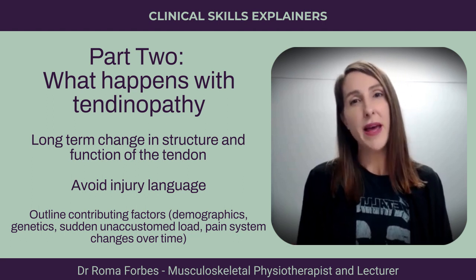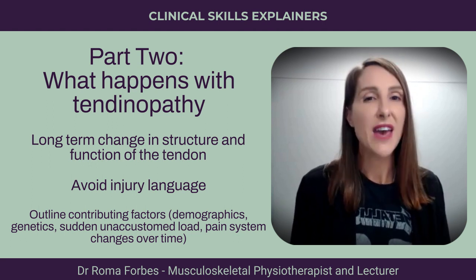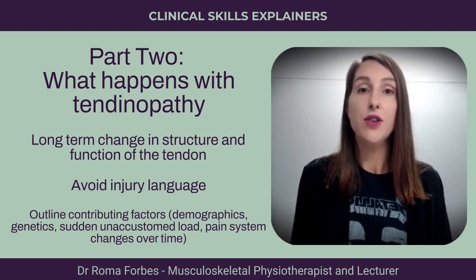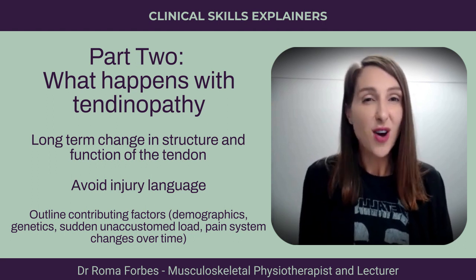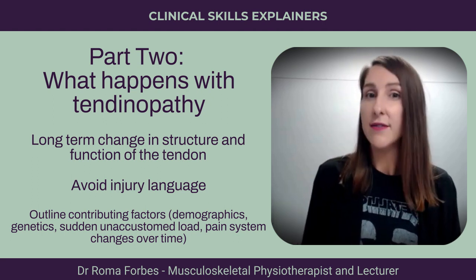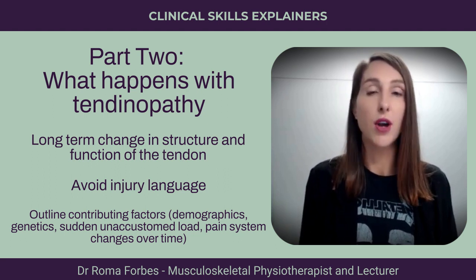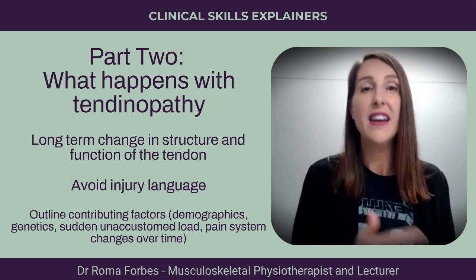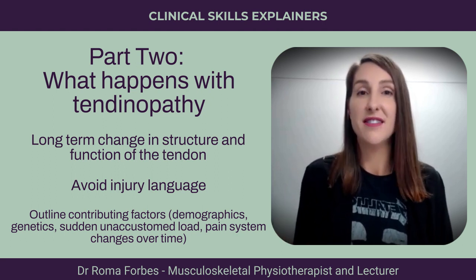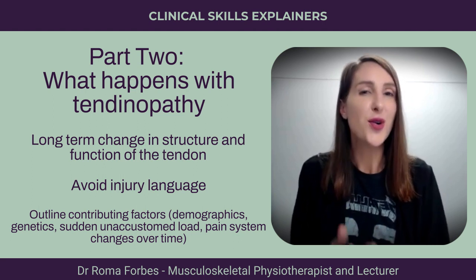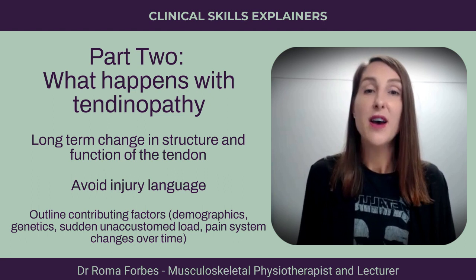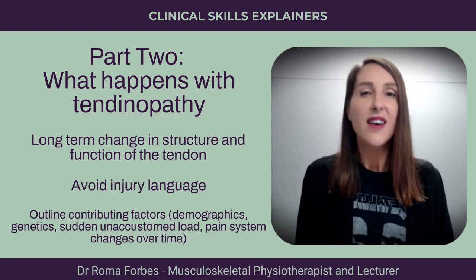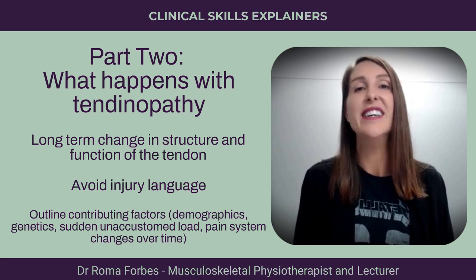Here it might also be important to start to explain some of the changes that happen to the nervous system when we have tendon pain for a long period of time. Normally a tendon adapts to new or increased loading by getting stronger and it can tolerate a lot of force. But in some cases, like in the case of the patient, that excessive new or unaccustomed load and other factors has led to a response in the tendon that's resulted in this change to its structure and function. What is interesting is that these changes actually occur quite similarly in tendons that are completely unloaded. So too much unaccustomed load and too little load can both compromise the structure and function of the tendon. So it's helpful for us to find a happy medium in managing load with the tendon to allow it to get better.